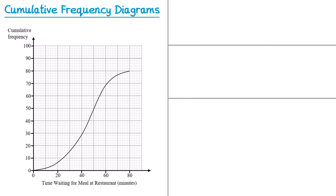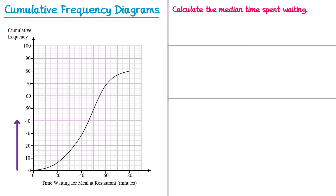Now let's try another example — a diagram about the time spent waiting for a meal at a restaurant, recorded in minutes. First we'll work out the median. We find the total cumulative frequency by locating the highest point on the diagram and reading across: it's 80. Be particularly careful here — the scale goes up to 100 but the cumulative frequency only goes up to 80, so some students mistakenly use 100. Half of 80 is 40, so we go up to 40, across to the curve, and down — the median is approximately 46 minutes.